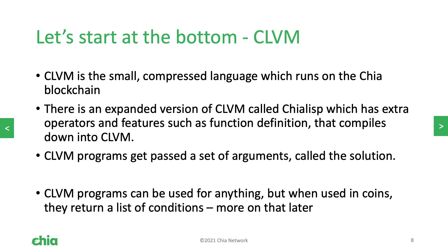There are a number of technologies all interacting together. At the bottom of this stack is CLVM — this is the small compressed language which runs on the Chia blockchain. There's an expanded version of CLVM which is called Chia Lisp. This has extra operators and features and will compile down into CLVM. You can think of the relationship between Chia Lisp and CLVM as sort of like the relationship between C and Assembly. When you run a Chia Lisp program, it gets passed a set of arguments which we call the solution. So you have the puzzle and you have the solution. You can think about writing Chia Lisp puzzles like writing functions in other programming languages, where the solution would be the parameters that are passed in.